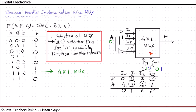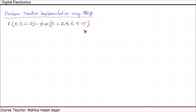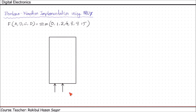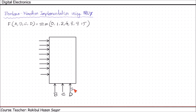Let me show another example. Suppose we have a function with 4 variables. The MUX needed should have 4 minus 1 equals 3 selection lines. Using 3 selection lines, the MUX we can get is an 8-to-1 line MUX. Let us construct that MUX. There will be 3 selection lines and 8 inputs. Here A is the most significant variable and D is the least significant variable, so the selection inputs will be B, C, D — where D equals S0, C equals S1, and B equals S2.